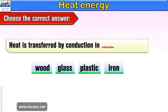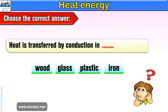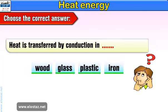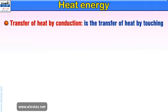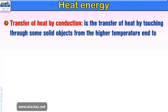Choose the correct answer: Heat is transferred by conduction in wood, glass, plastic, or iron. Well done — Iron. Transfer of heat by conduction is the transfer of heat by touching through some solid objects from the higher temperature end to the lower temperature one.